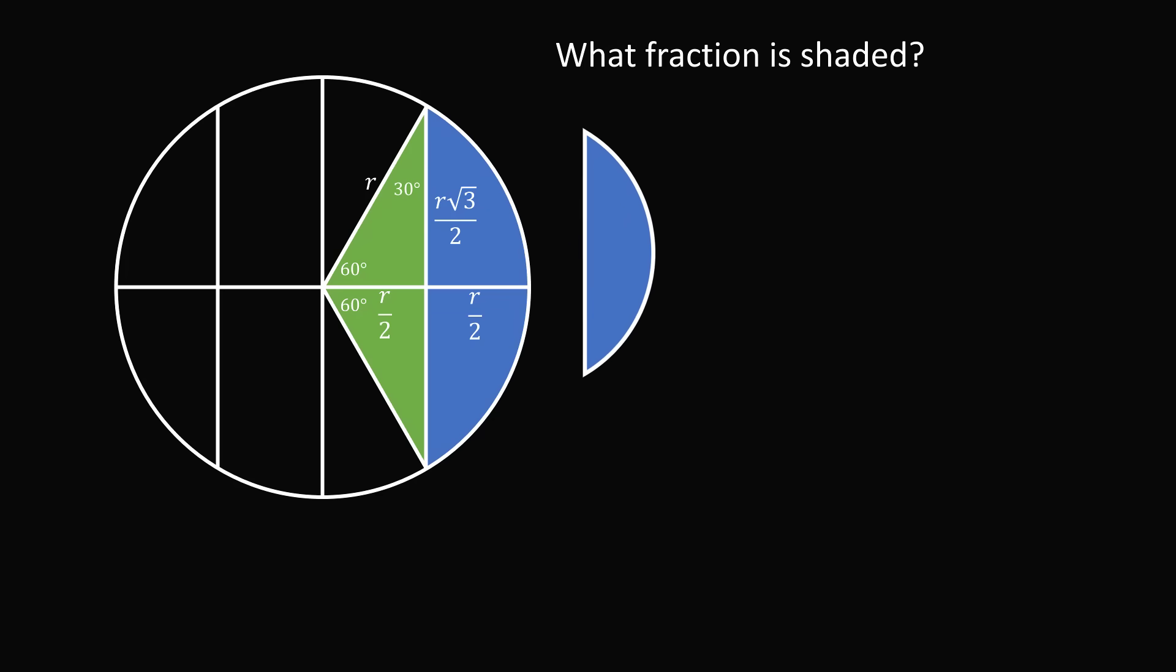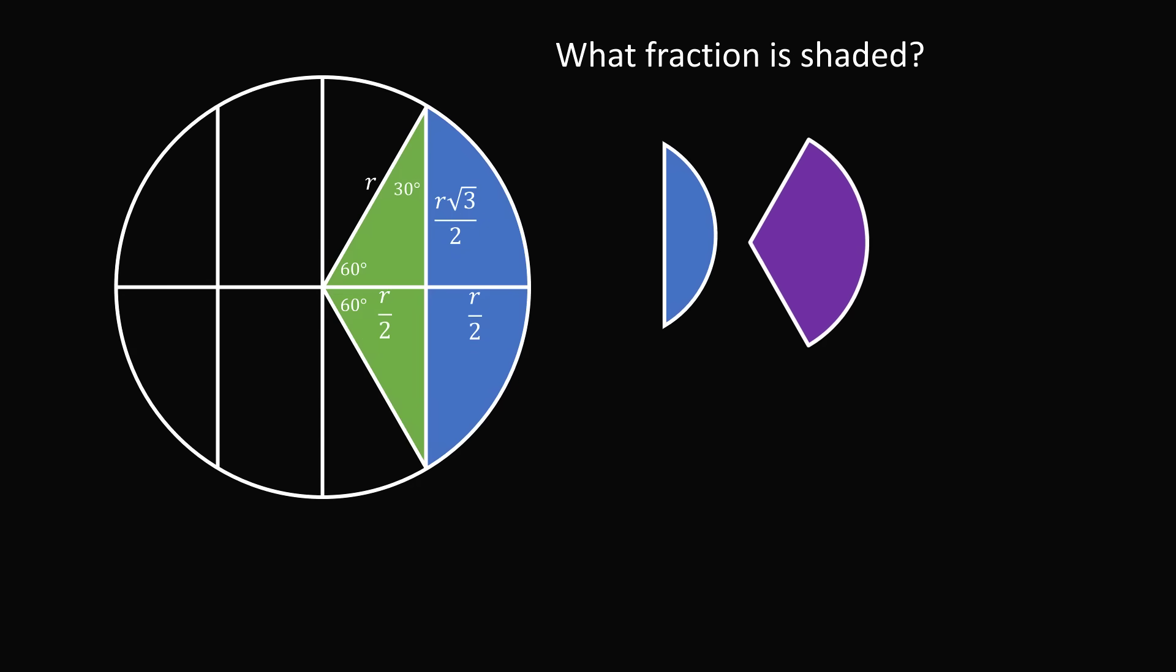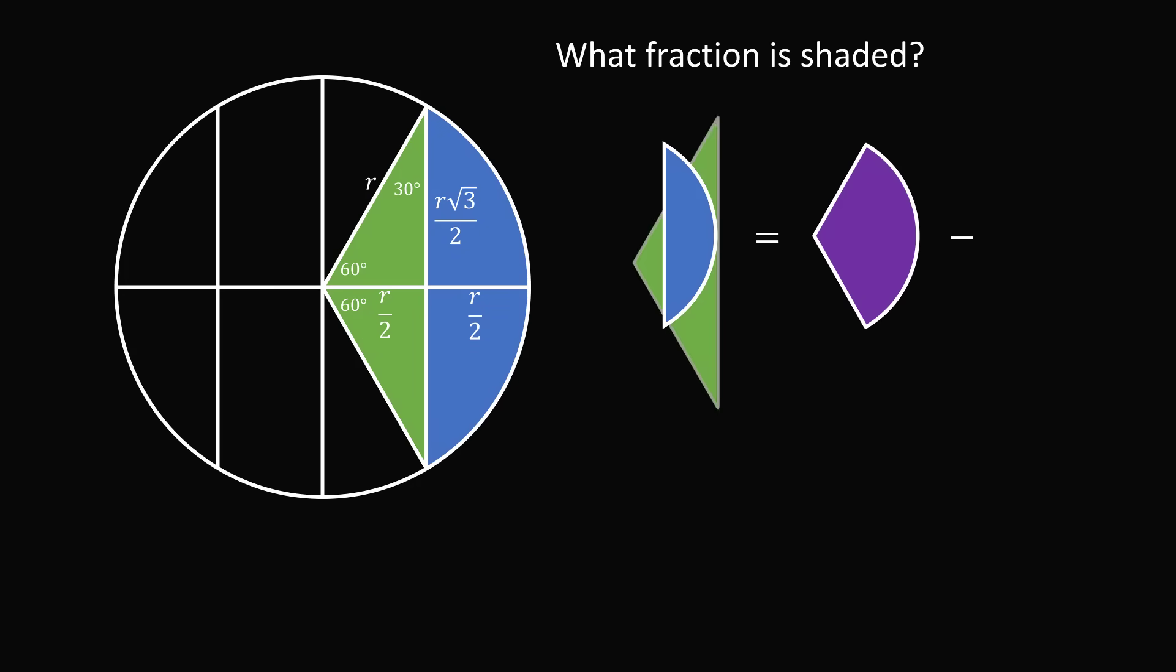The area of the circular segment shown in blue will be equal to the area of the entire circular sector minus the area of the green triangle. So all that remains is to figure out the relevant dimensions. Now what's the central angle equal to? It will be equal to 60 plus 60 which is equal to 120 degrees. Converting that into radians gives 2pi over 3.